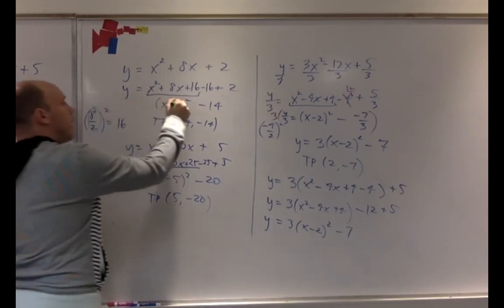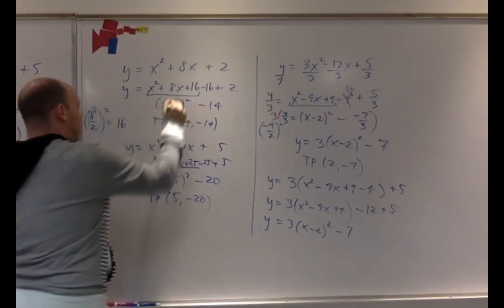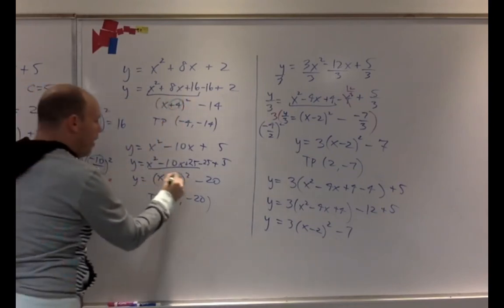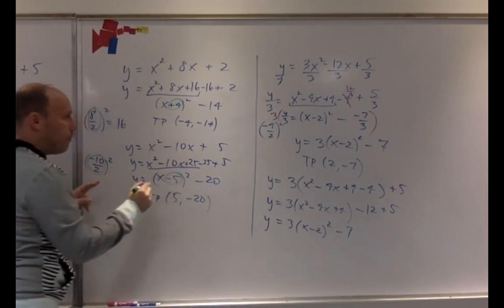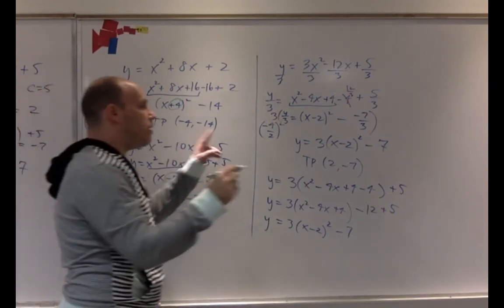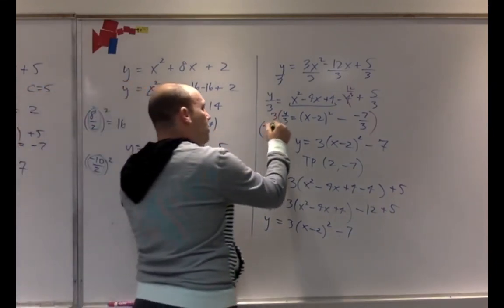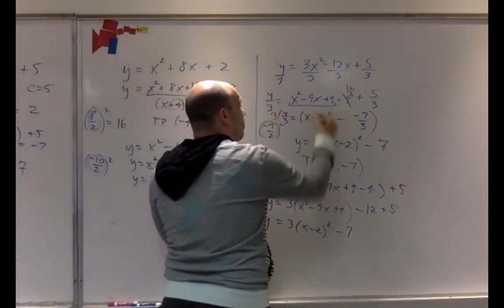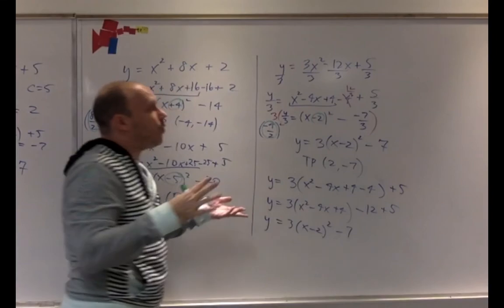It's not a coincidence that the numbers end up here. The method reliably produces the vertex form, and these values guide you to the correct answer each time.